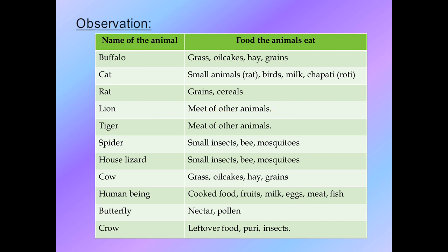Lion eats meat of other animals - note the spelling: meat is M-E-A-T - there is no plant product involved, so lion is a carnivore. Tiger is also a carnivore. Spider eats small insects, bees, mosquitoes - no plant product - so spider is also a carnivore. House lizard also eats small insects, bees, mosquitoes - again no plant product - so house lizard is carnivorous. Cow is same as buffalo - grass, oil cakes, hay, grains - so cow is an herbivore.